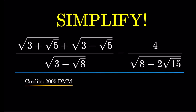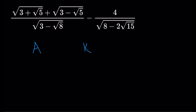The first thing to notice is that there's a lot of nested radicals, and there is a nice way for us to eliminate nested radicals. One of the more famous techniques is to use the AK method.